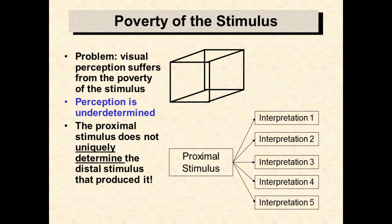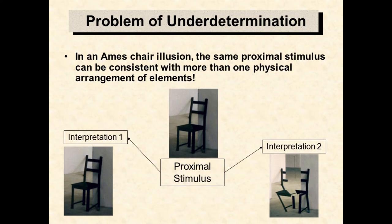The Ames chair is another example of the problem of underdetermination. From one perspective, the proximal stimulus gives rise to the perception of a normal chair. However, the physical arrangement that actually causes the proximal stimulus is an arrangement of disjoint parts that are not very chair-like. Clearly, the proximal stimulus is consistent with two very different models of the world.